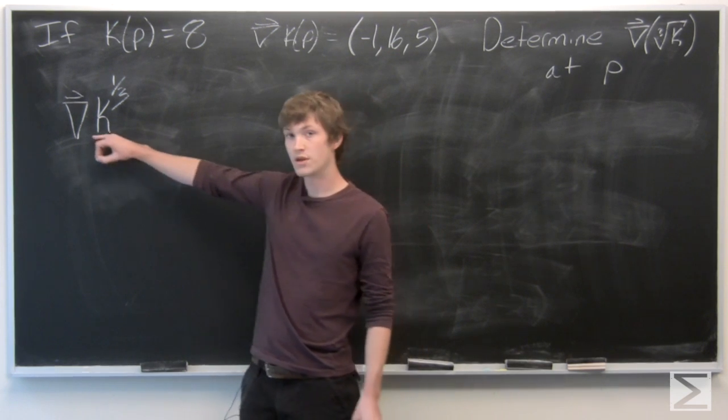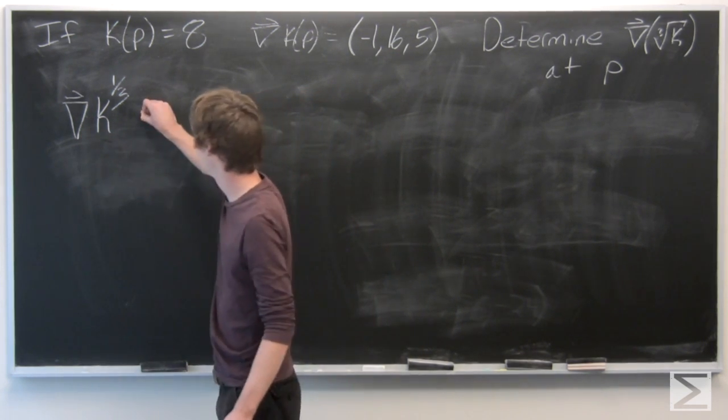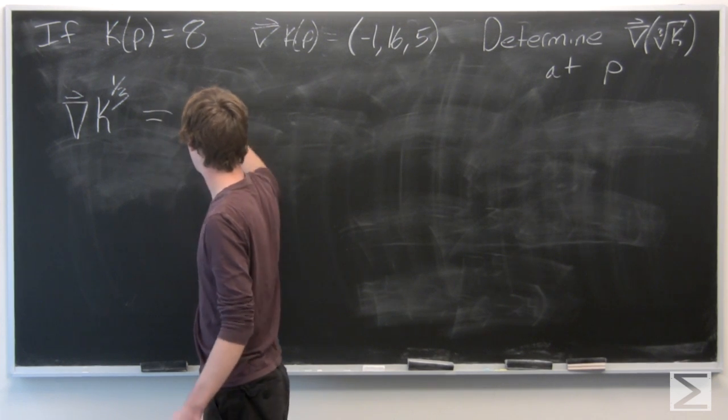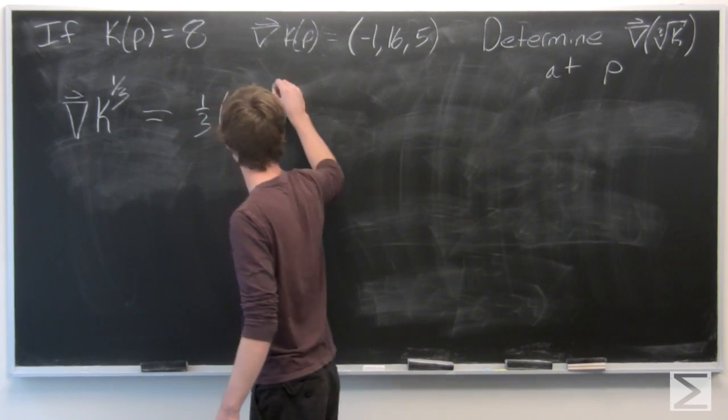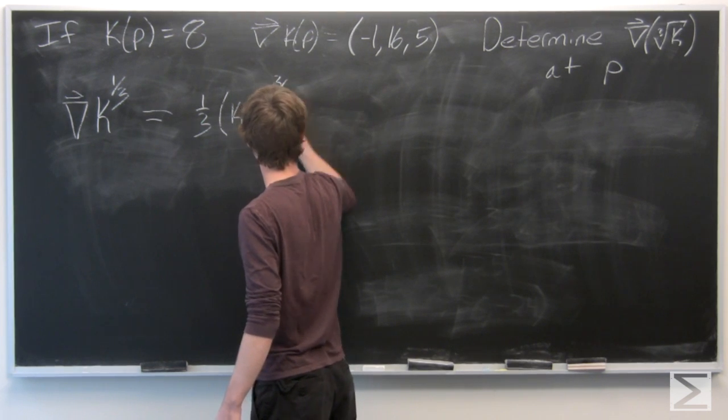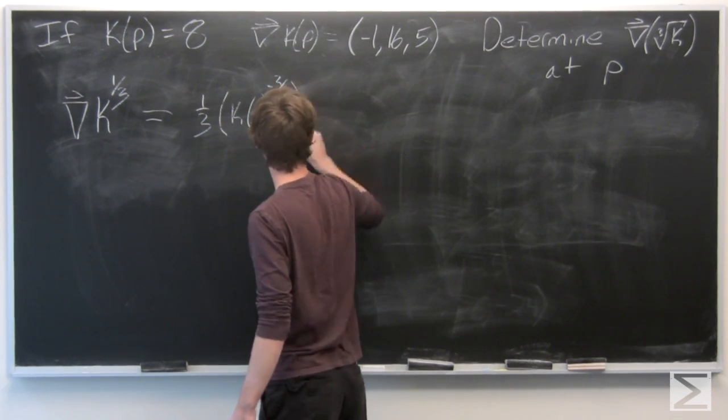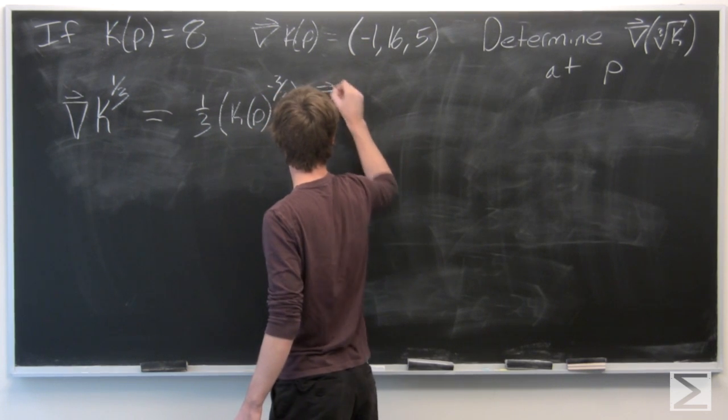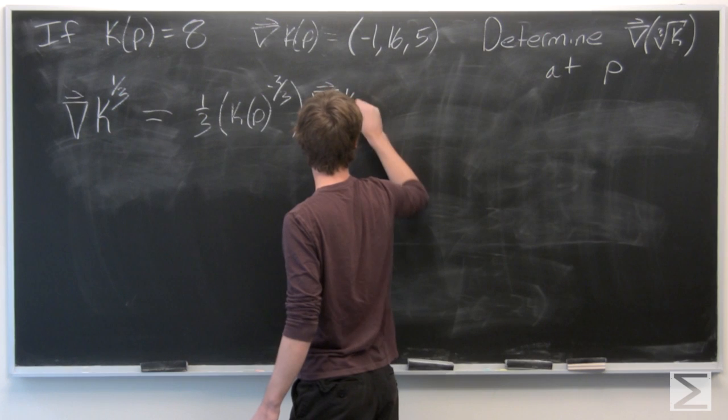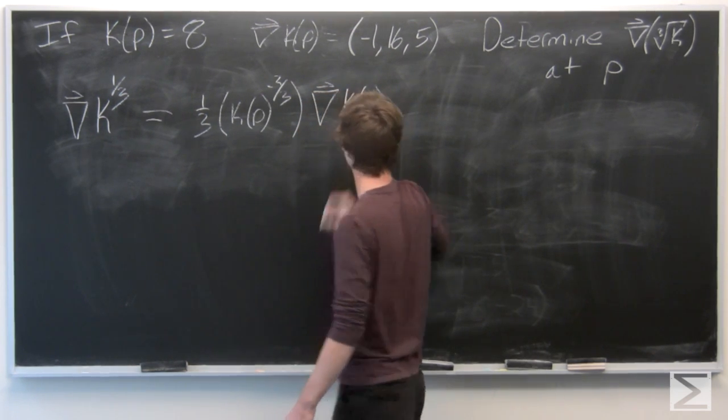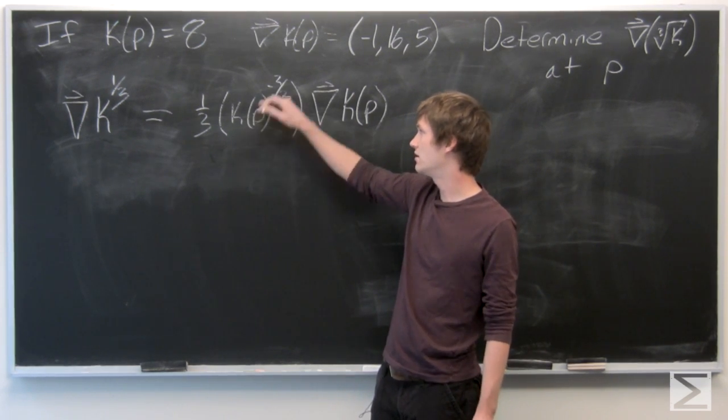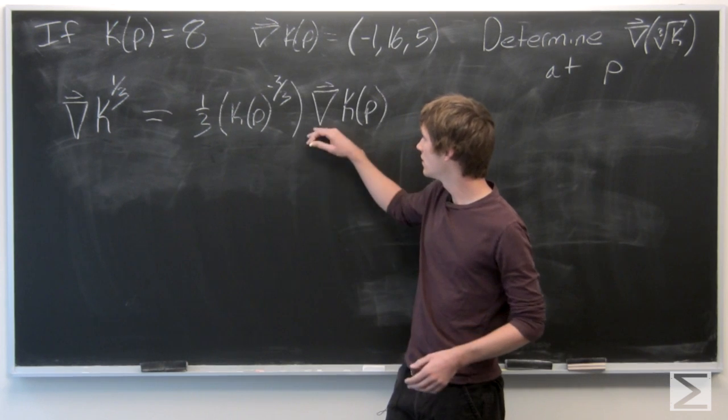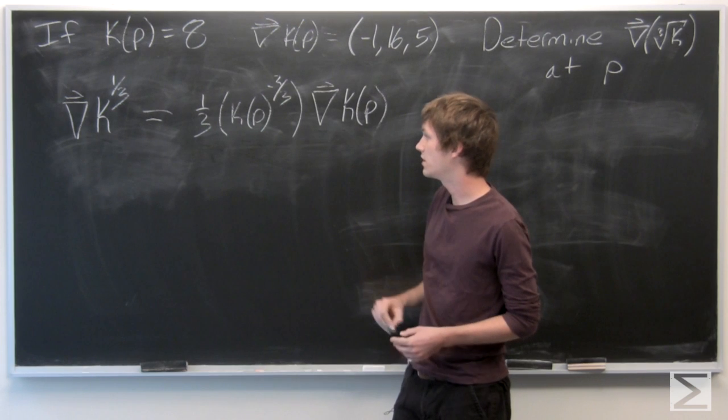Which we know with the product rule is equal to 1 third times k of p to the negative 2 thirds times the gradient vector of k at p.